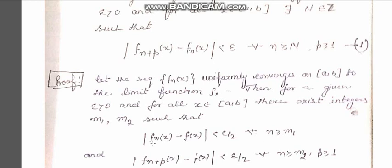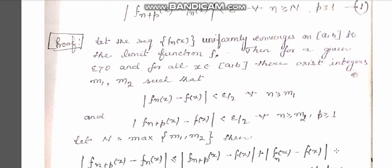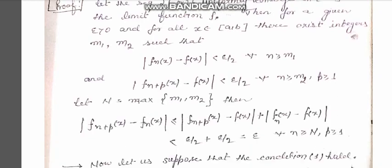And the modulus of f_{n+p}(x) minus f(x) is strictly less than epsilon over 2 for all n greater than or equal to m2 and p greater than or equal to 1. Now let us assume that capital N is an integer equal to the maximum of m1 and m2.